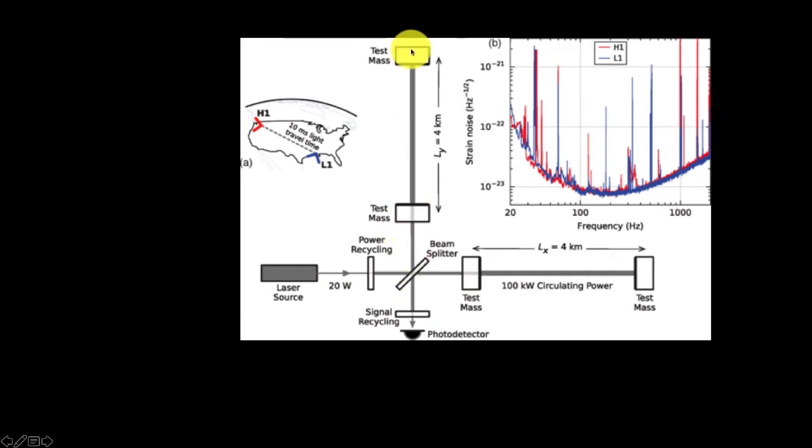Most of the light comes through and then just bounces back and forth, so even though you're only putting 20 watts in, because it bounces backwards and forwards so many times, you get 100 kilowatts of circulating power. You need that sort of power to get the incredible sensitivity we need. Then a small fraction of that is bled out back down and combined to the photodetector.